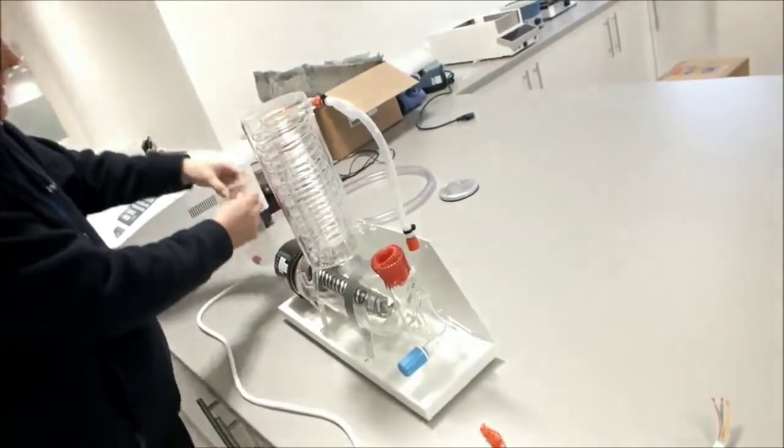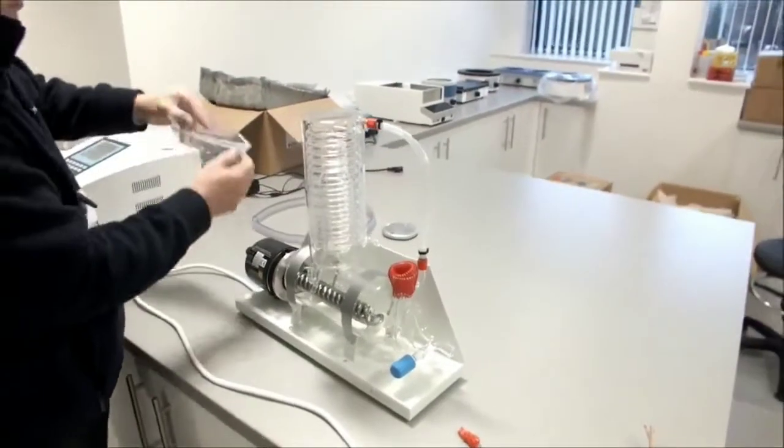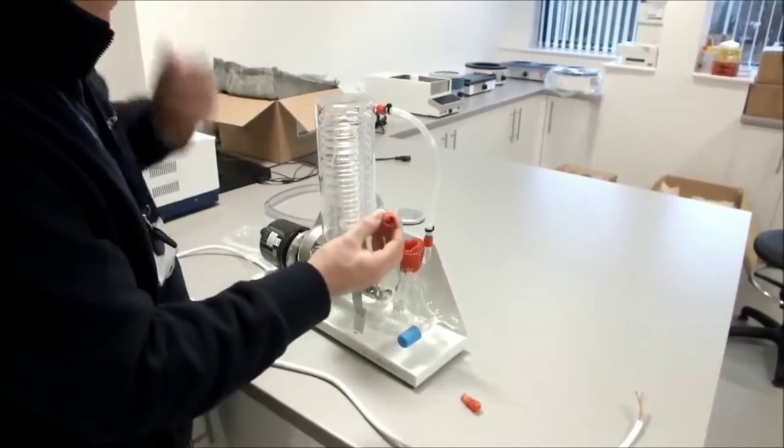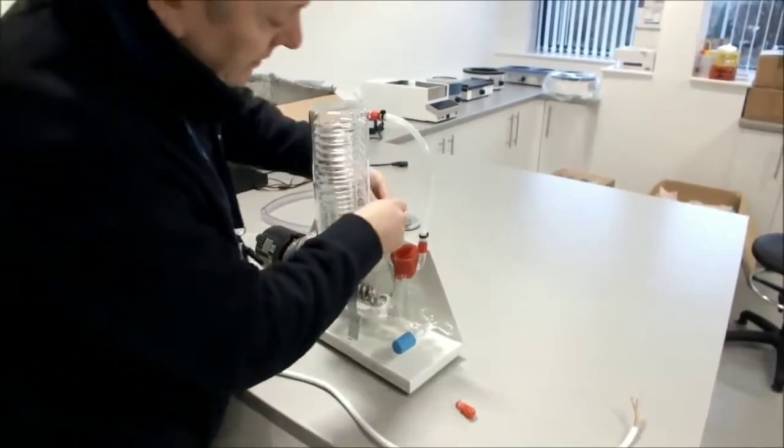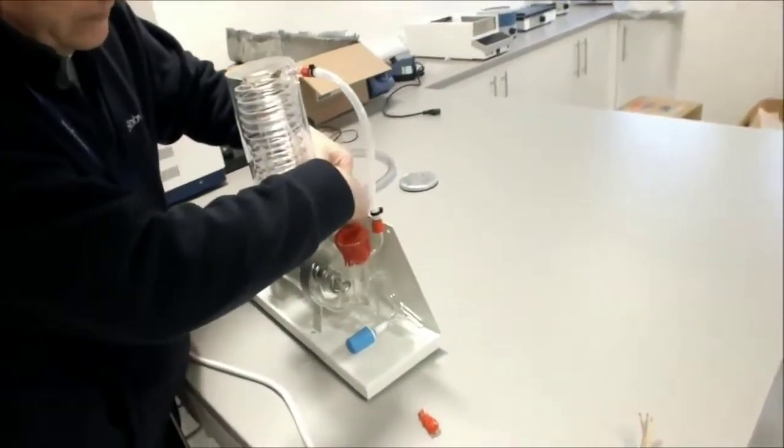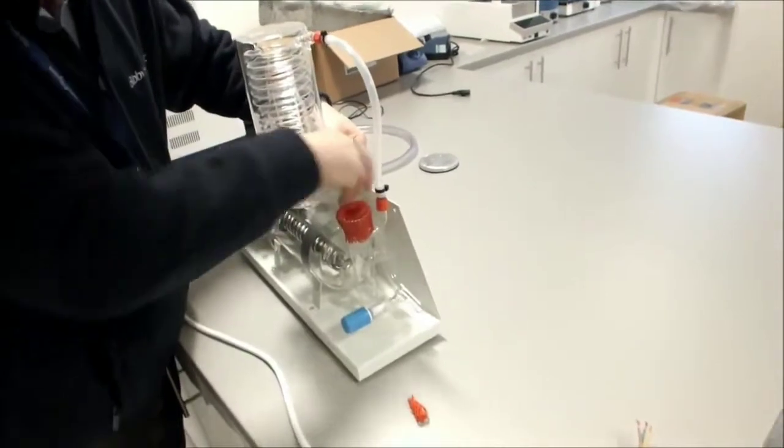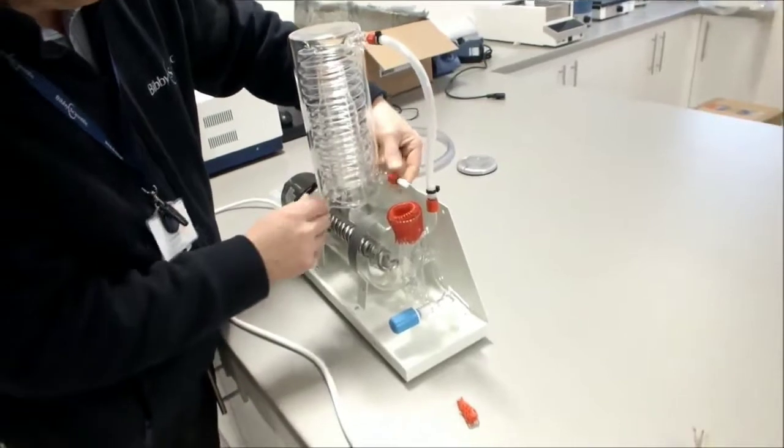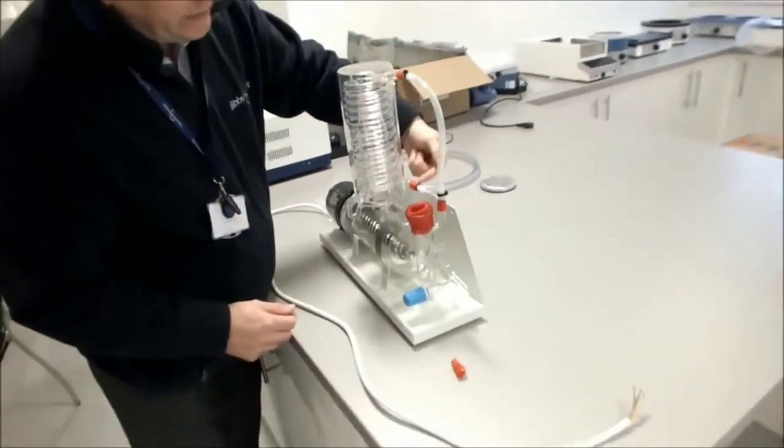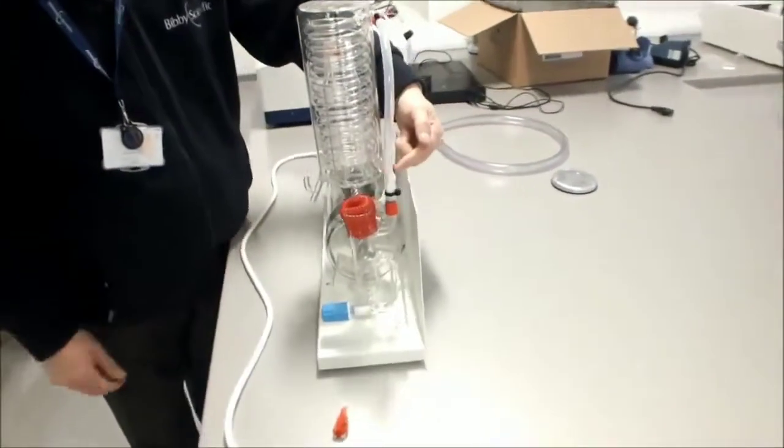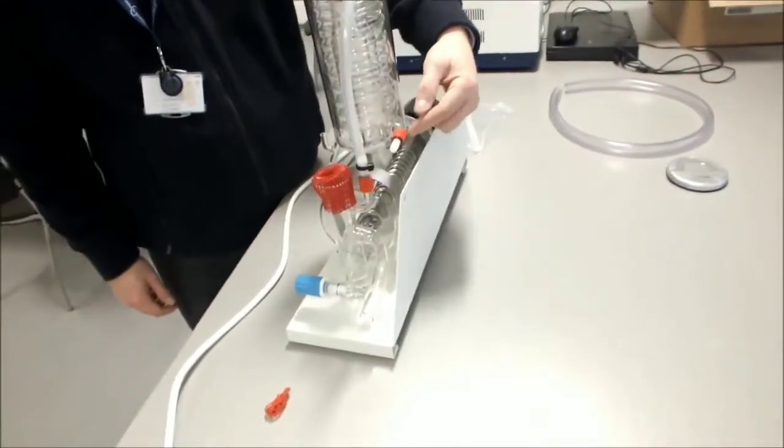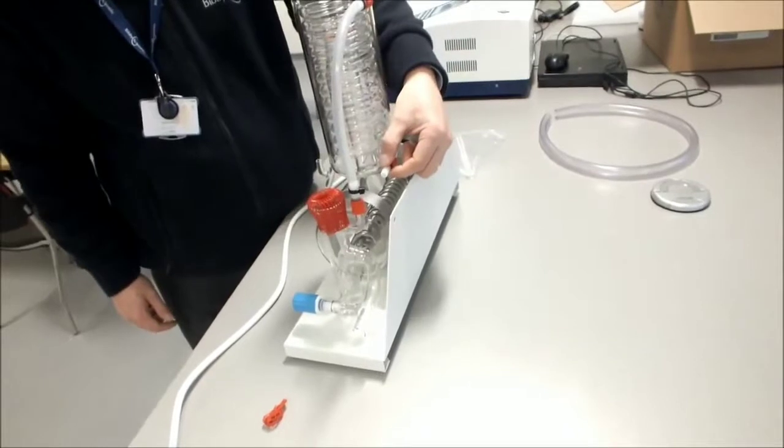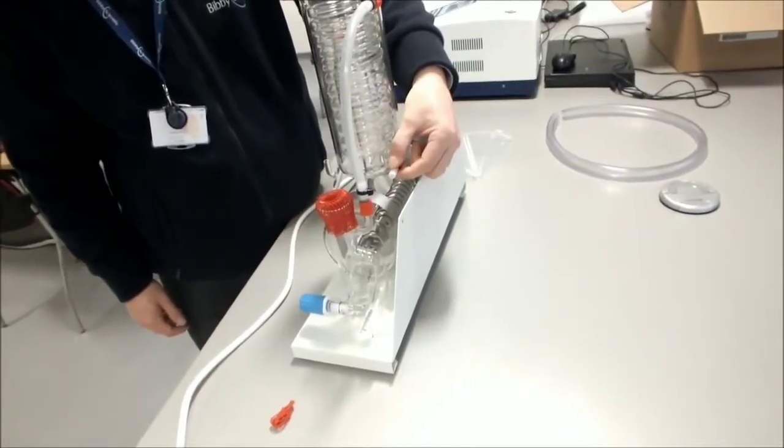We can then take the spare connector from our hose kit and connect that to the cold water inlet connector to the condenser, which is on the lower. This then is the connection you will make to your cold water supply. Use quality tubing and make sure you use hose clips, tie wraps, etc., when connecting it onto it.